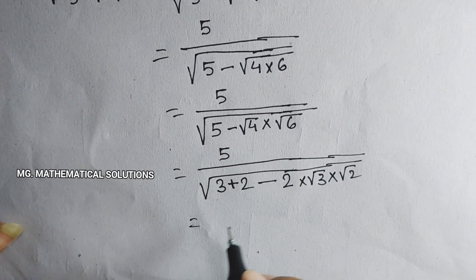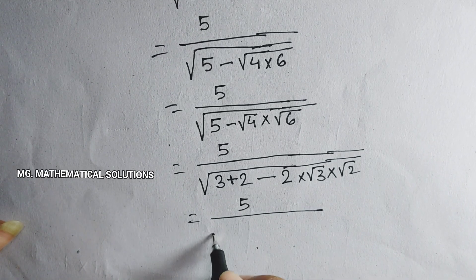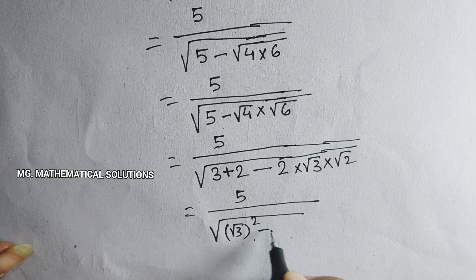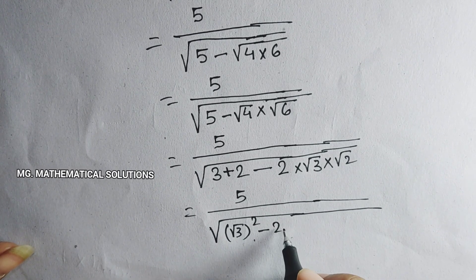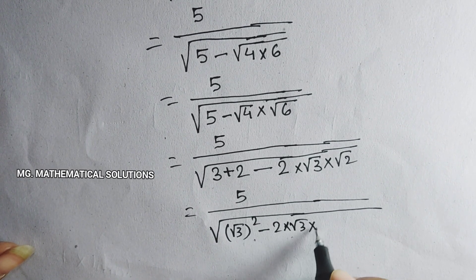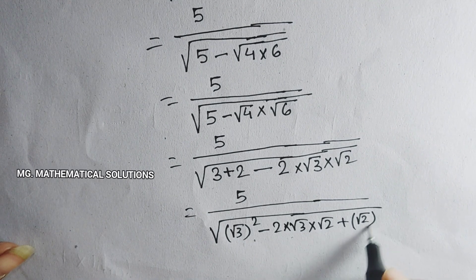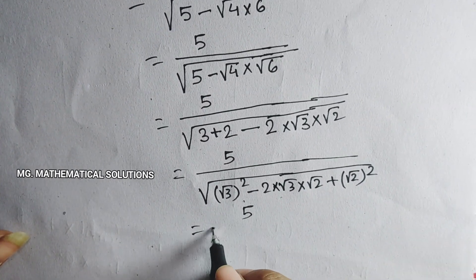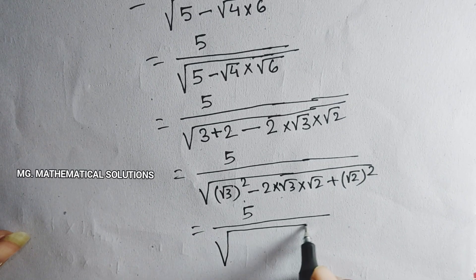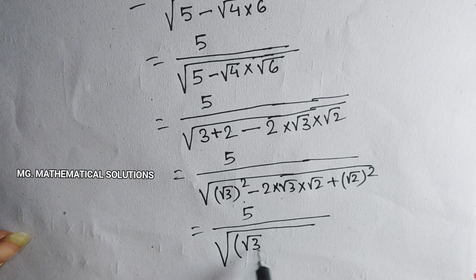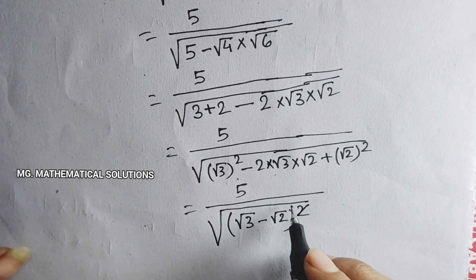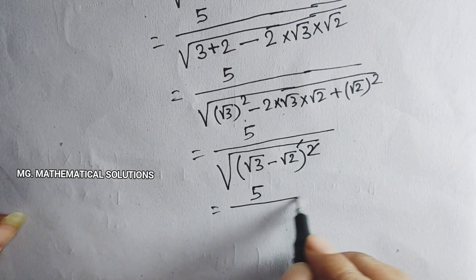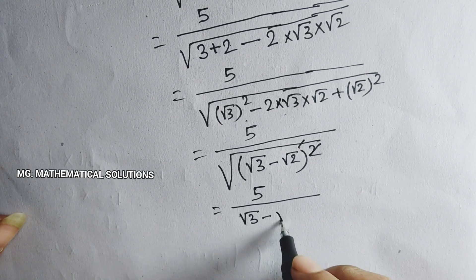So the denominator becomes root under (root 3 squared minus 2 times root 3 times root 2 plus root 2 squared). We can see this is the formula for (a minus b) whole square, where a equals root 3 and b equals root 2. The root cancels, giving us 5 by (root 3 minus root 2).